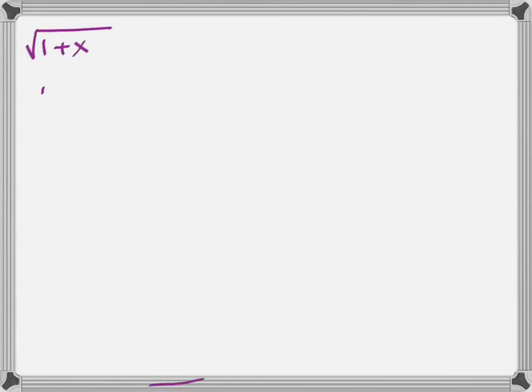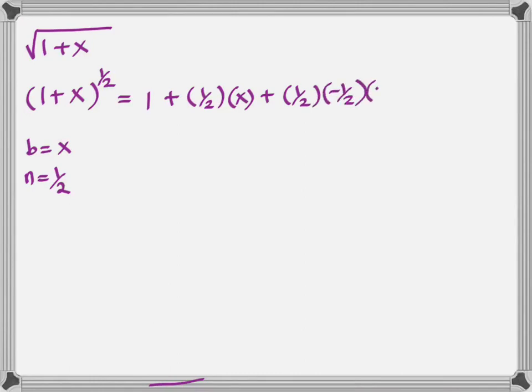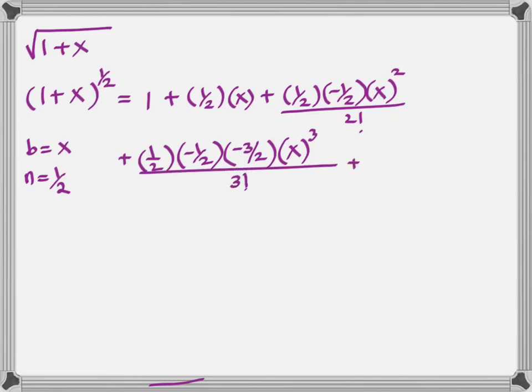Another example. (1 + x)^(1/2). This time, the power is a fraction, a positive fraction. So, B is x. N is half. And then, now, you have to take care of the nitty-gritty details related to the fraction. This time, it's (1/2)(-1/2)·x^2 over 2 factorial, and so on. (1/2)(-1/2)(-3/2)·x^3 over 3 factorial. Simplify it.